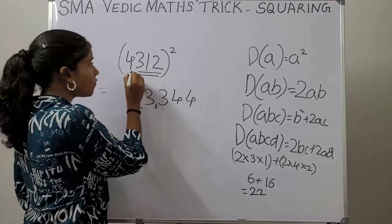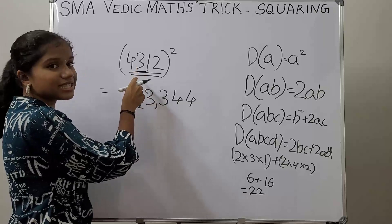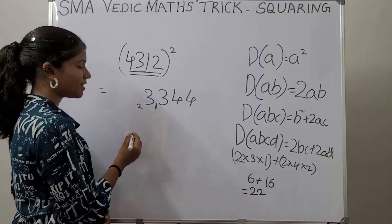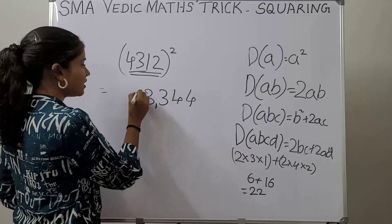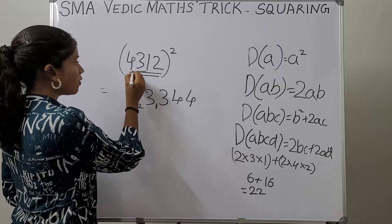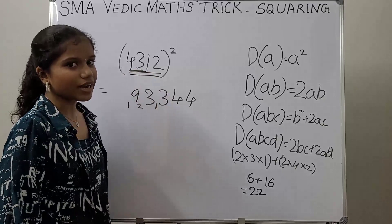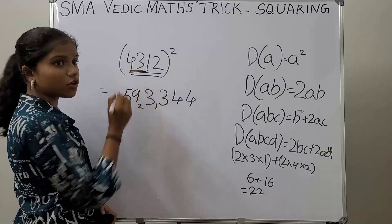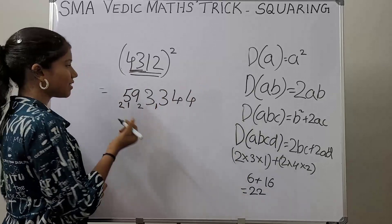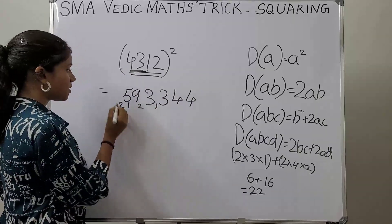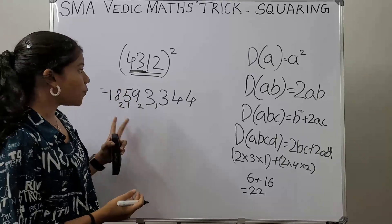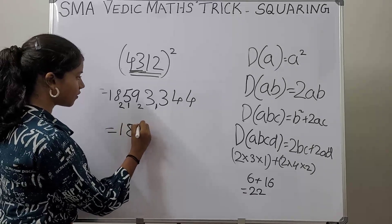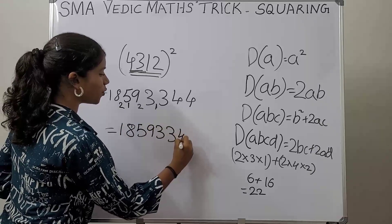Continuing 4312²: duplex of 431 is 3² + 2×4×1 = 9 + 8 = 17, plus carry 2 = 19 — write 9, carry 1. Duplex of 43 is 2×4×3 = 24, plus carry 1 = 25 — write 5, carry 2. Duplex of 4 is 4² = 16, plus carry 2 = 18. So our answer is 18,593,344.